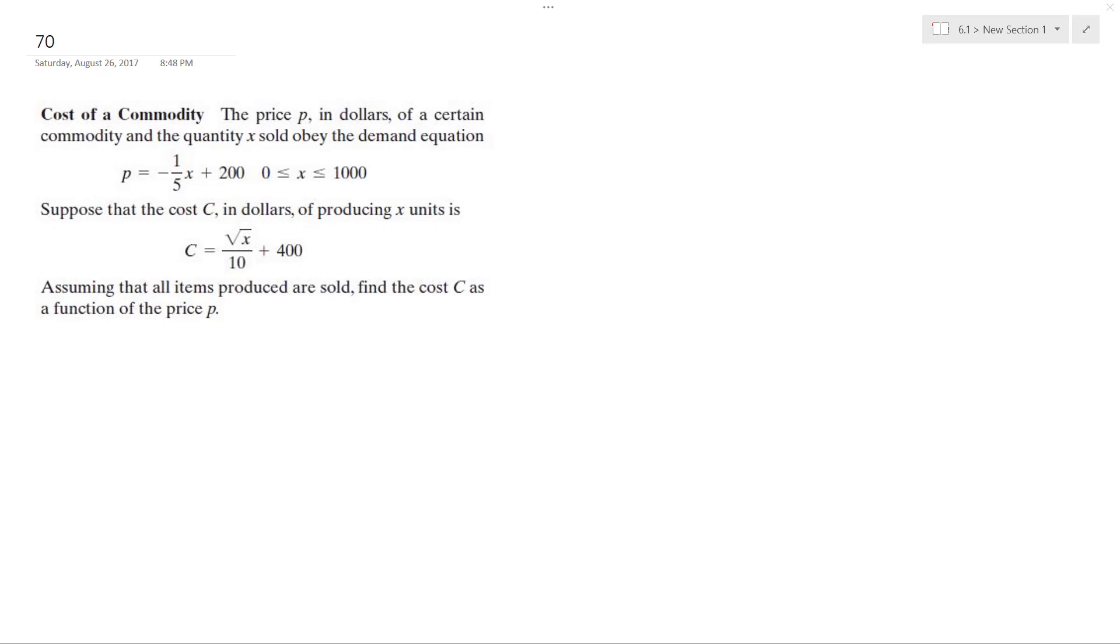We have a cost of a commodity here. Price P in dollars of a certain commodity, the quantity X sold to obey the demand equation they give here. Then suppose the cost C in dollars for producing X units is given here. Assuming that all items are sold, find the cost C as a function of price P.